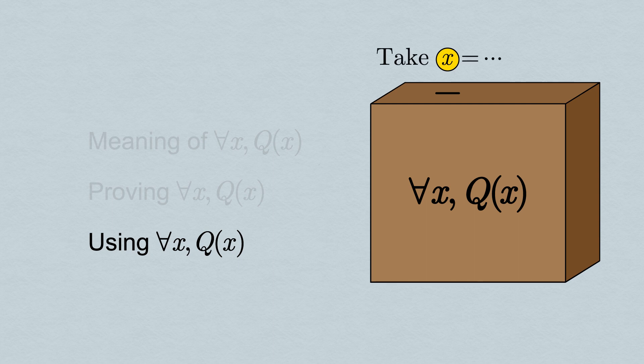Note that the choice of x is active and entirely ours. This is why when we proved the statement, we had to passively accept whatever x was given to us. The two sides of the transaction work hand in hand.